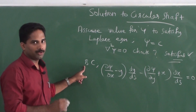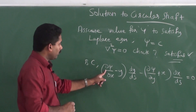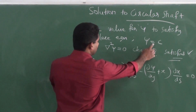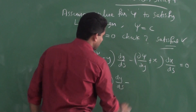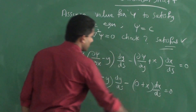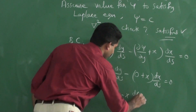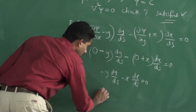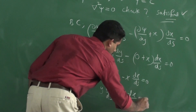Now equation number 2 is derived — that is the boundary condition, the second boundary condition: d/dx of psi minus y, etcetera, should be equal to 0. Now just substitute the value: d/dx of psi with psi constant goes to 0. So we get: minus y·(dy/ds) minus d/dy of psi, which again goes to 0, plus x·(dx/ds), that must be equal to 0. That gives: minus y·(dy/ds) plus x·(dx/ds) = 0, or rearranging with sign change: y·(dy/ds) plus x·(dx/ds) = 0.